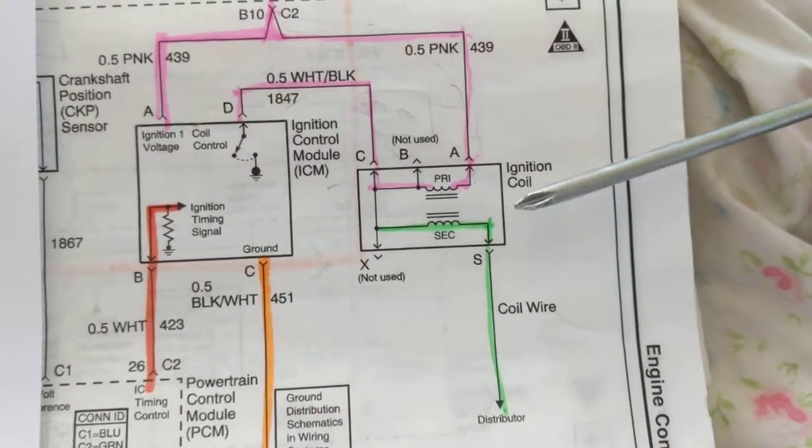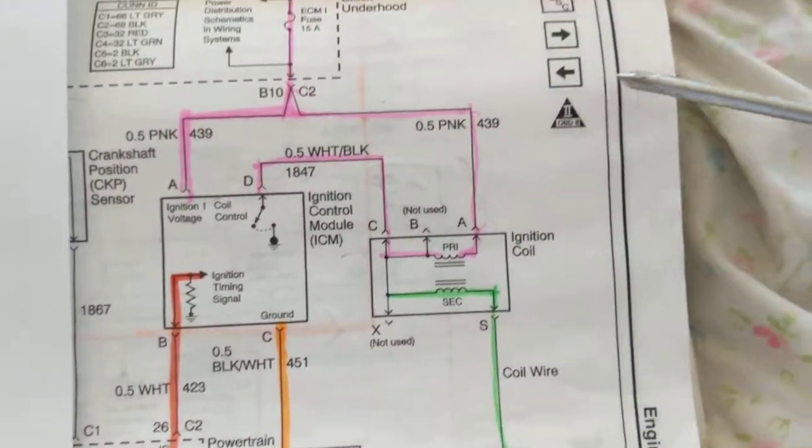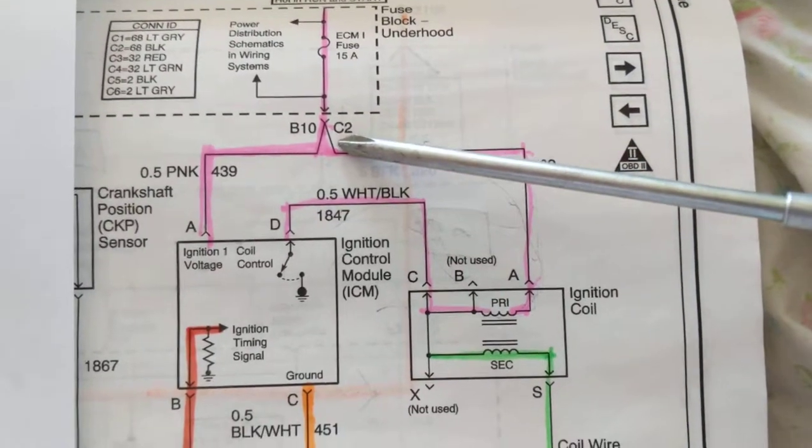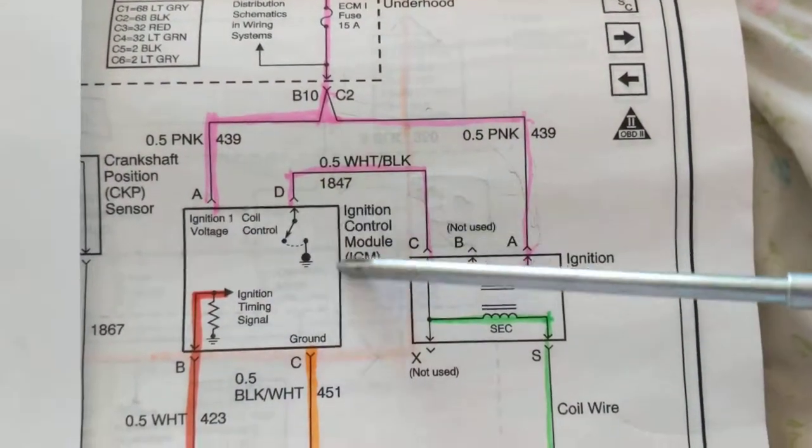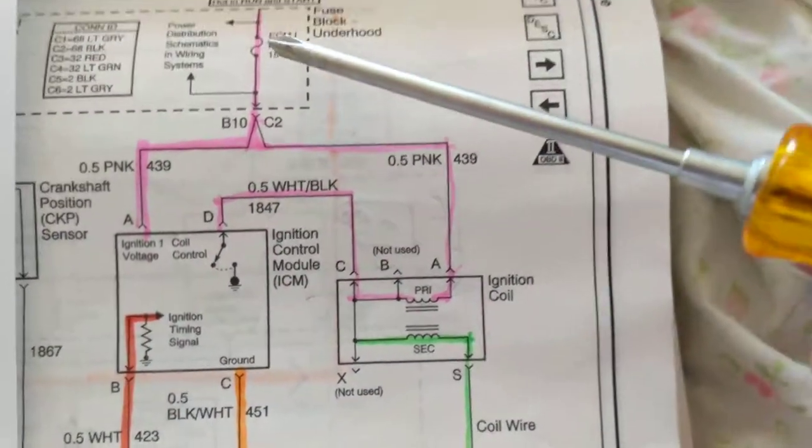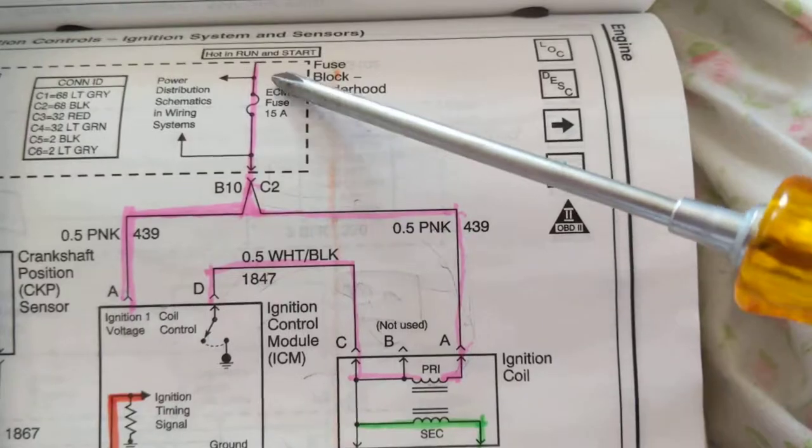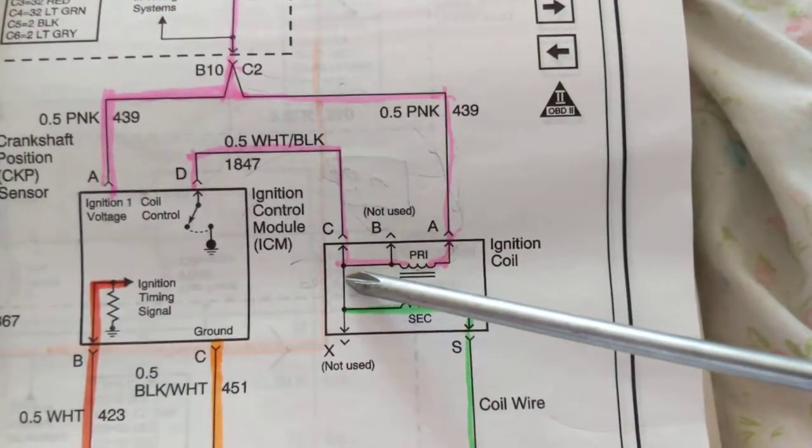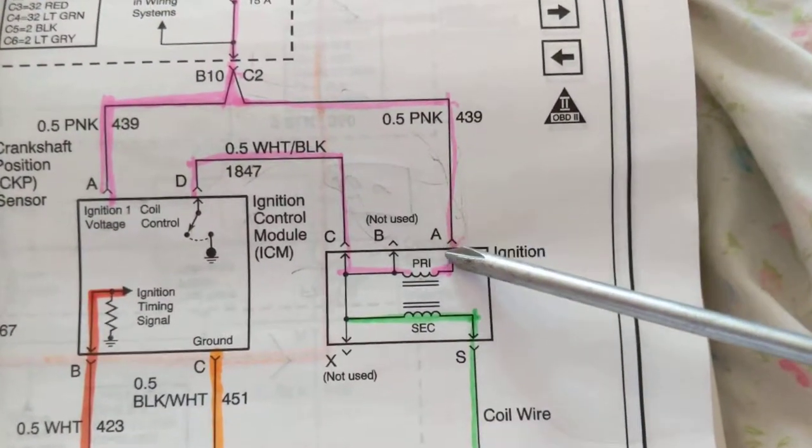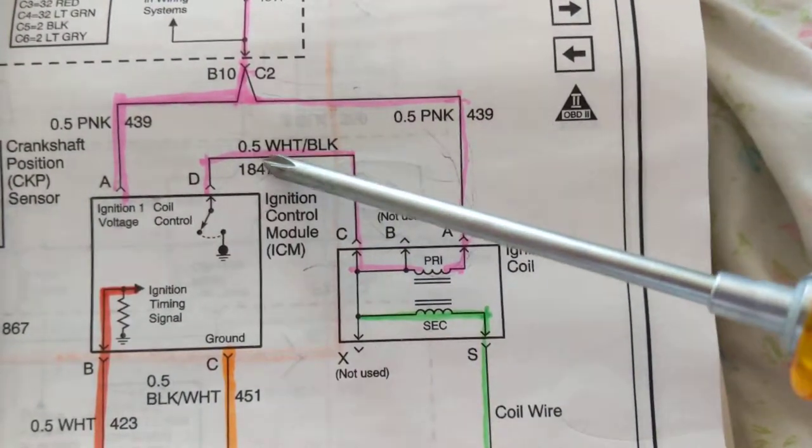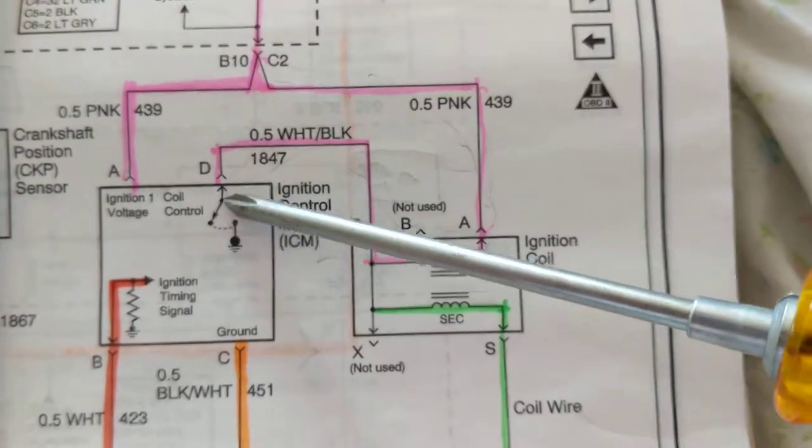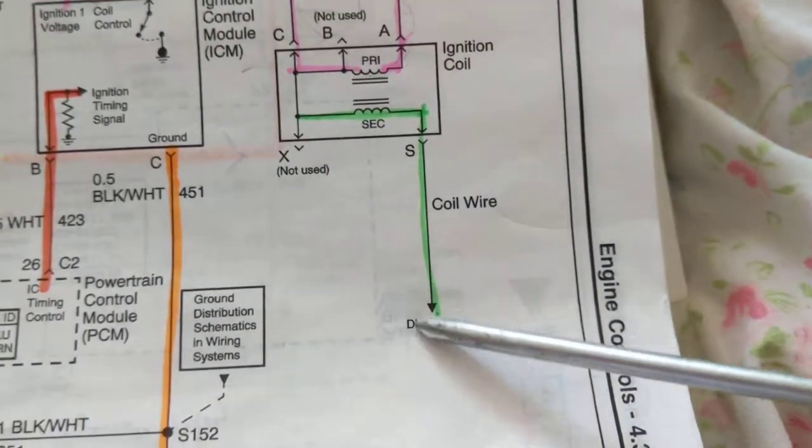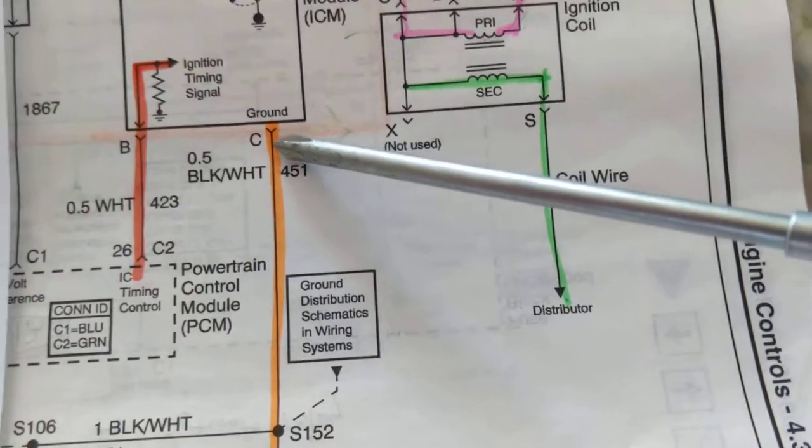So if you follow it, I made the pink B+. B+ goes here, splits up, goes to this module, ignition control module. Now there's another path for the current to flow. The current will also flow through this, which is the ignition coil, through the primary. It'll go through A, through C, and then into D, and we'll get back into this coil control, basically to ground the other side.